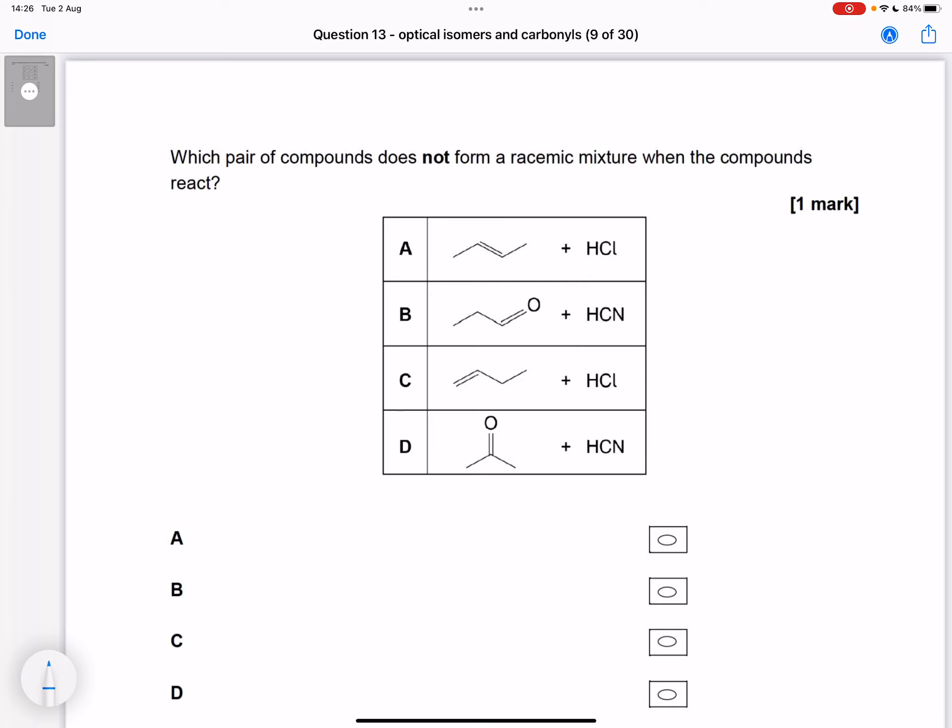We need to look at what our products would be. If we reacted this with HCl, we'd end up with 2-chlorobutane, and there is a chiral carbon here. So this would give us two enantiomers and therefore a racemic mixture.